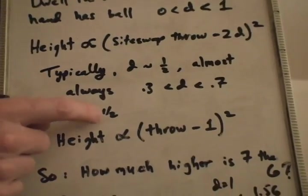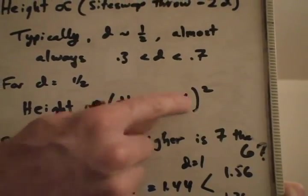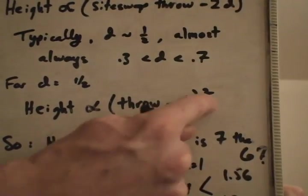For dwell of one half, the formula is particularly easy. In that case, it's just the siteswap throw value minus 1. That's 2d: 2 times a half is 1, quantity squared.